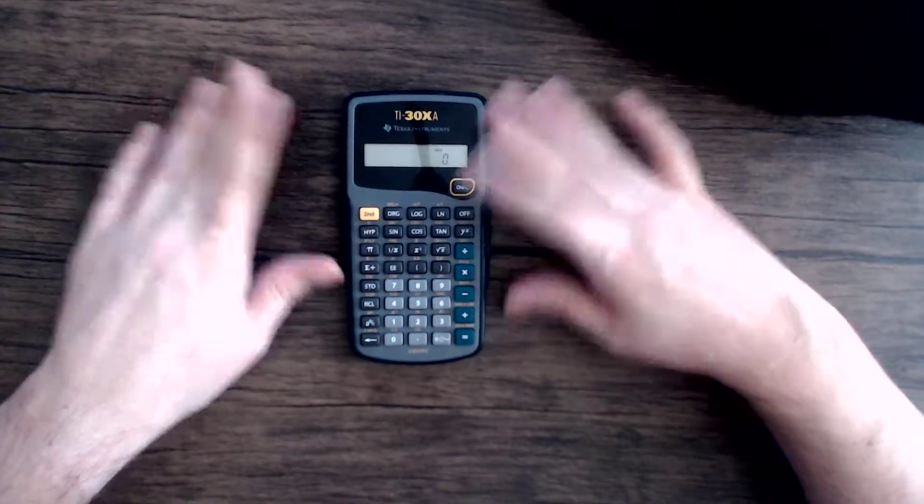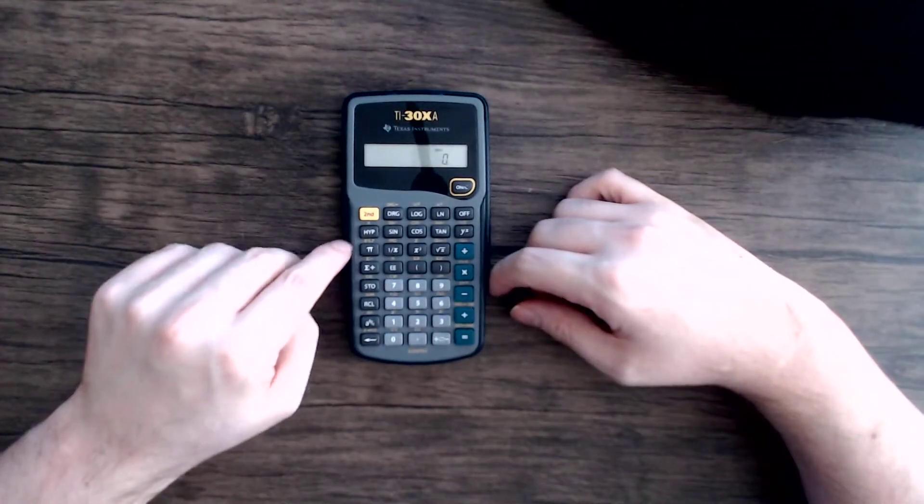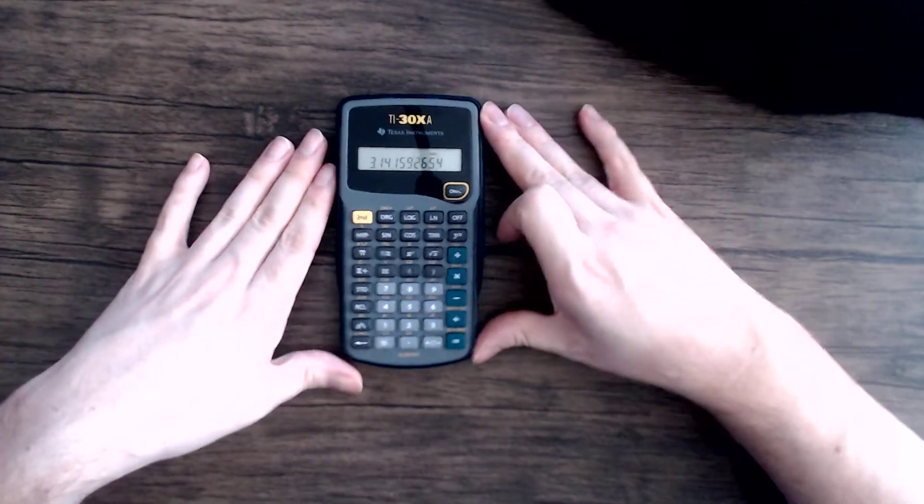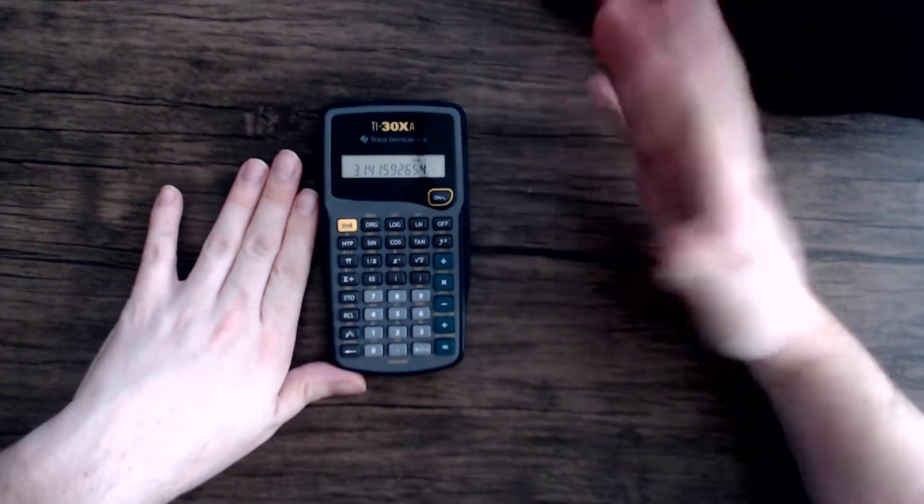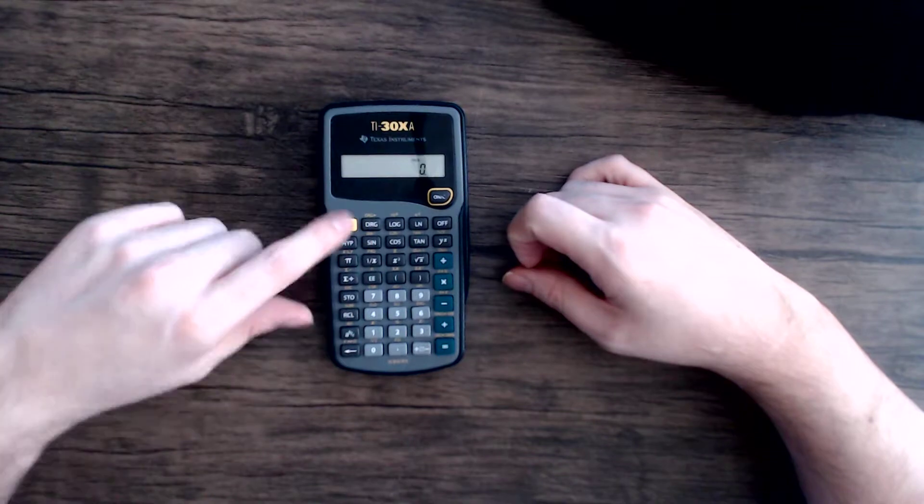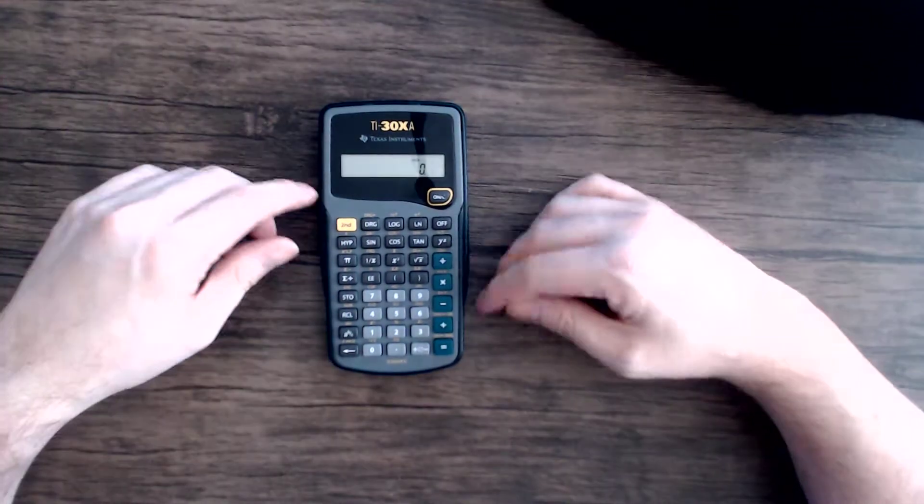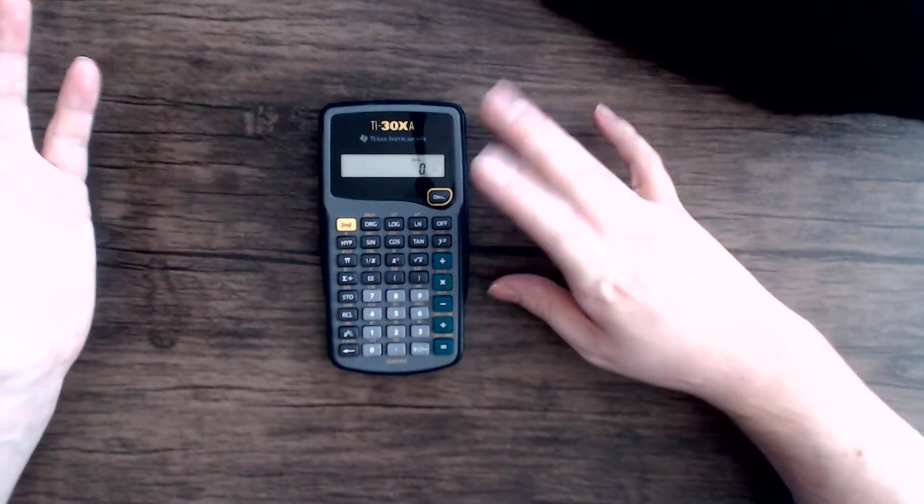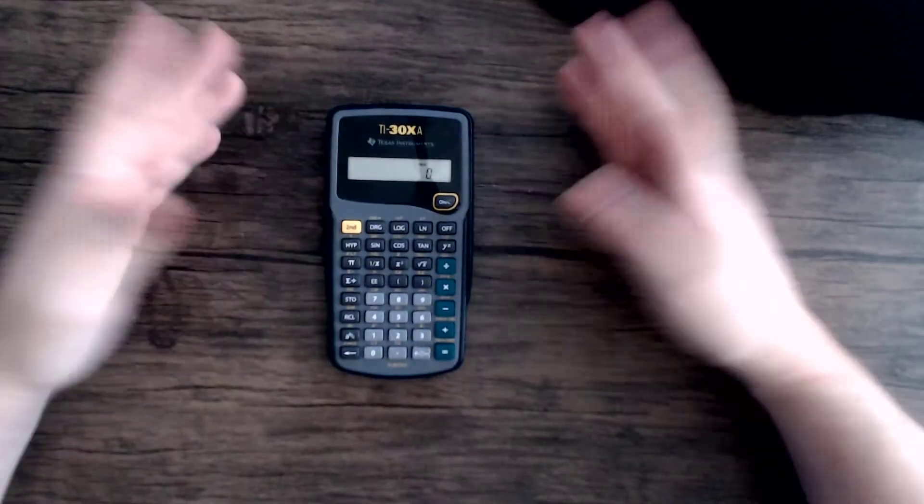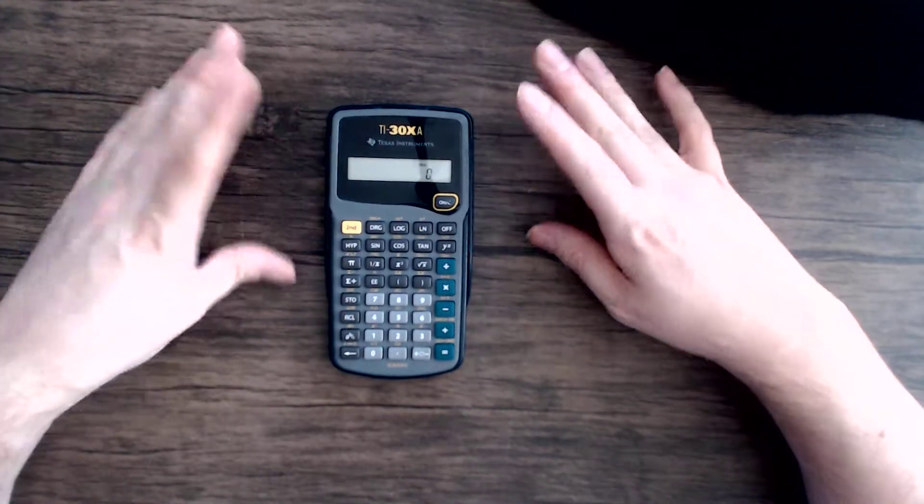It also has a lot of different buttons for other functions. Having a pi button is kind of nice, especially because it provides this many digits. Lots of other things that I'm not going to get into because that's kind of outside the scope of what my channel does.